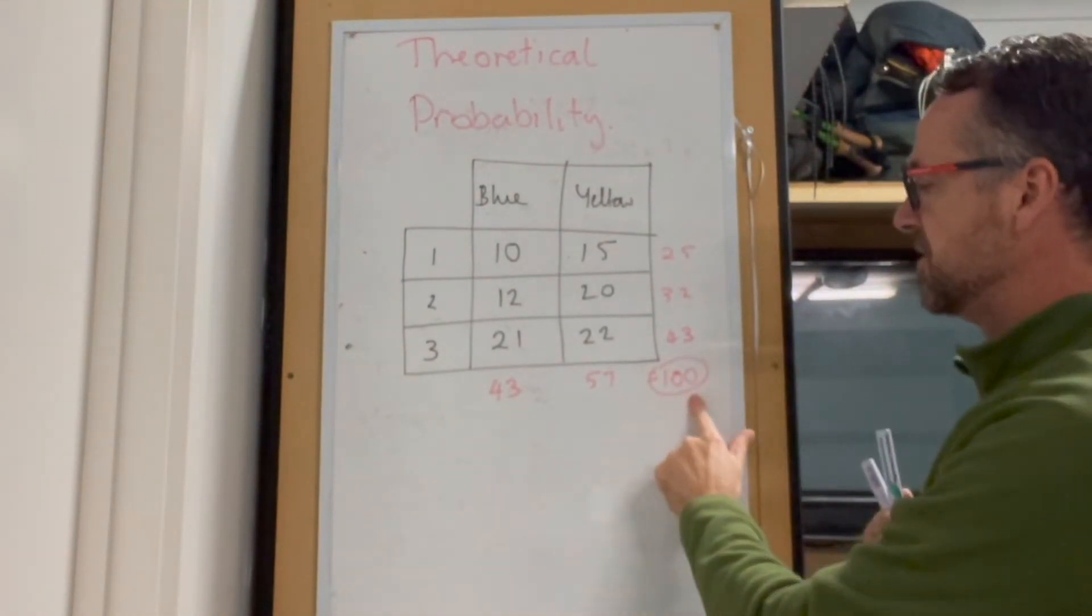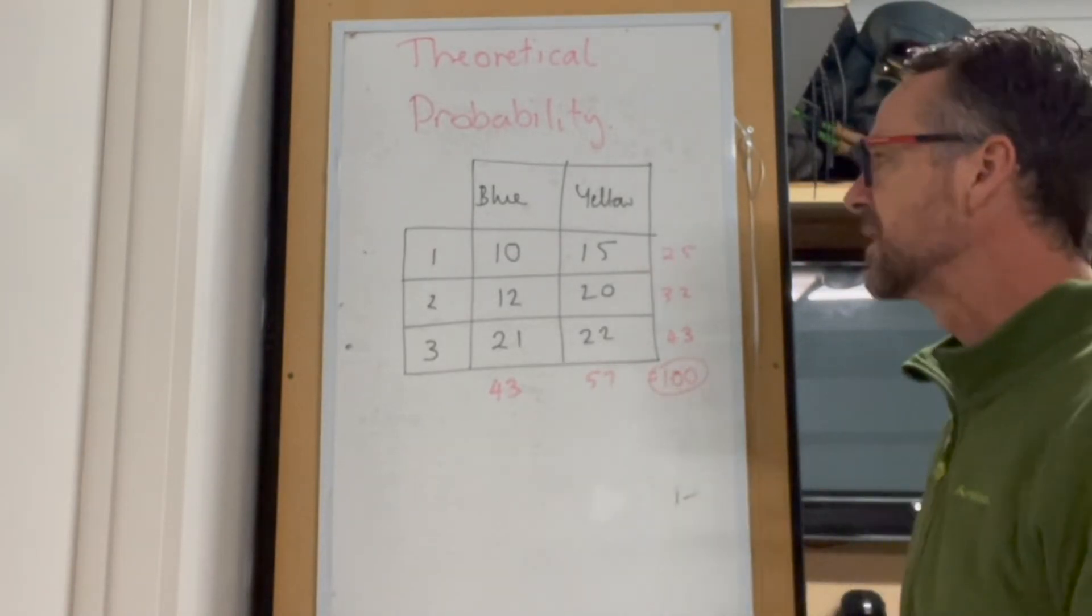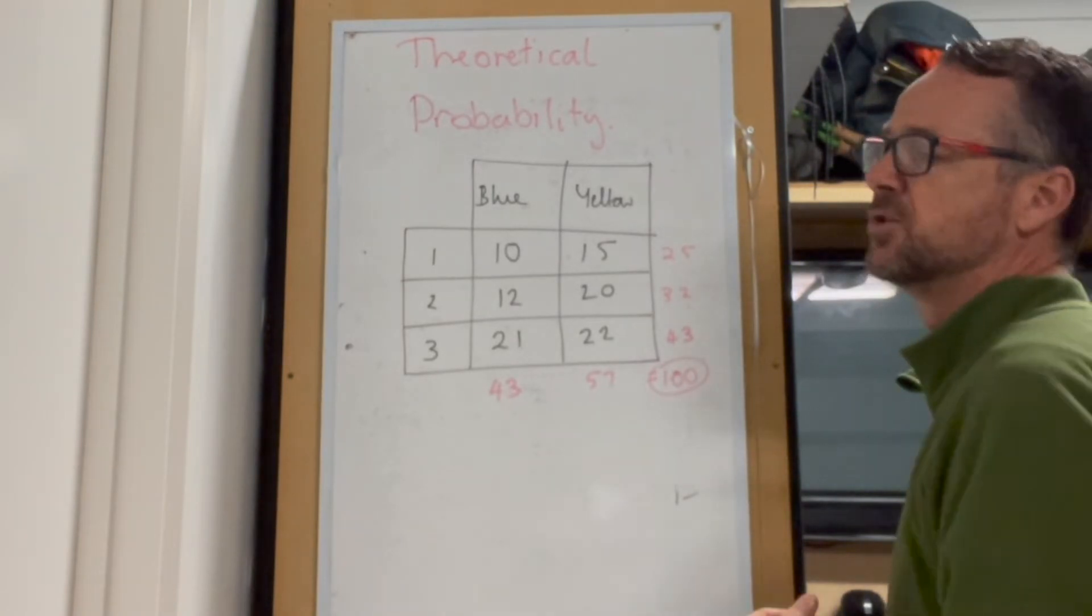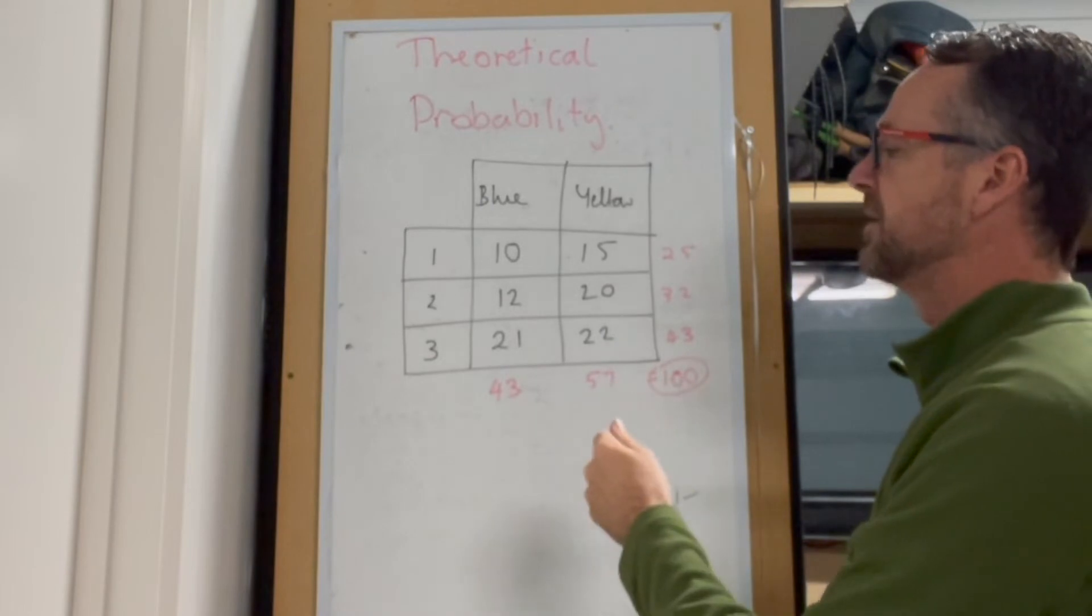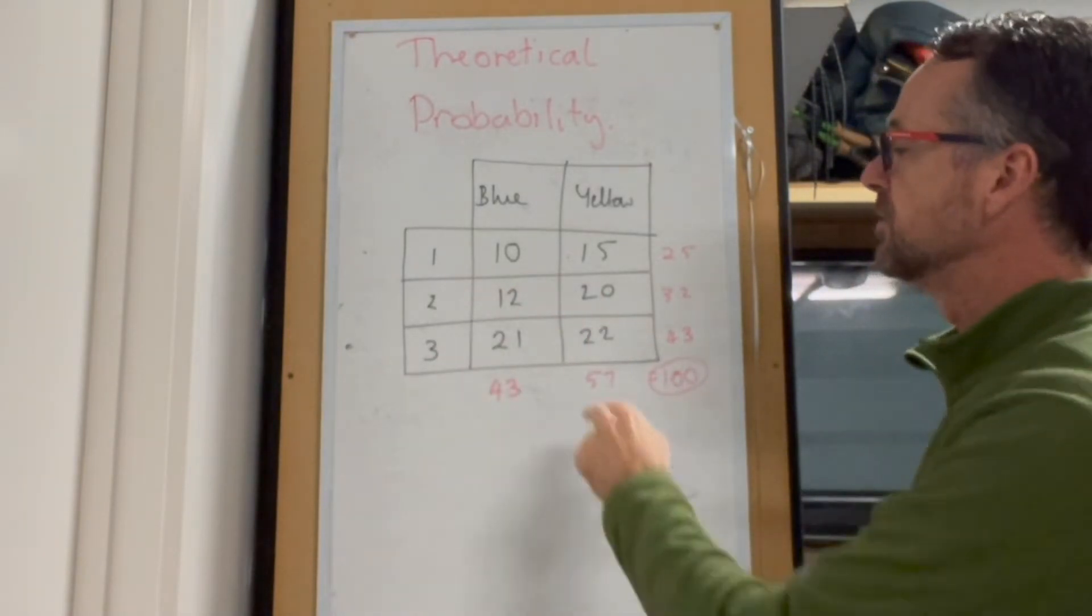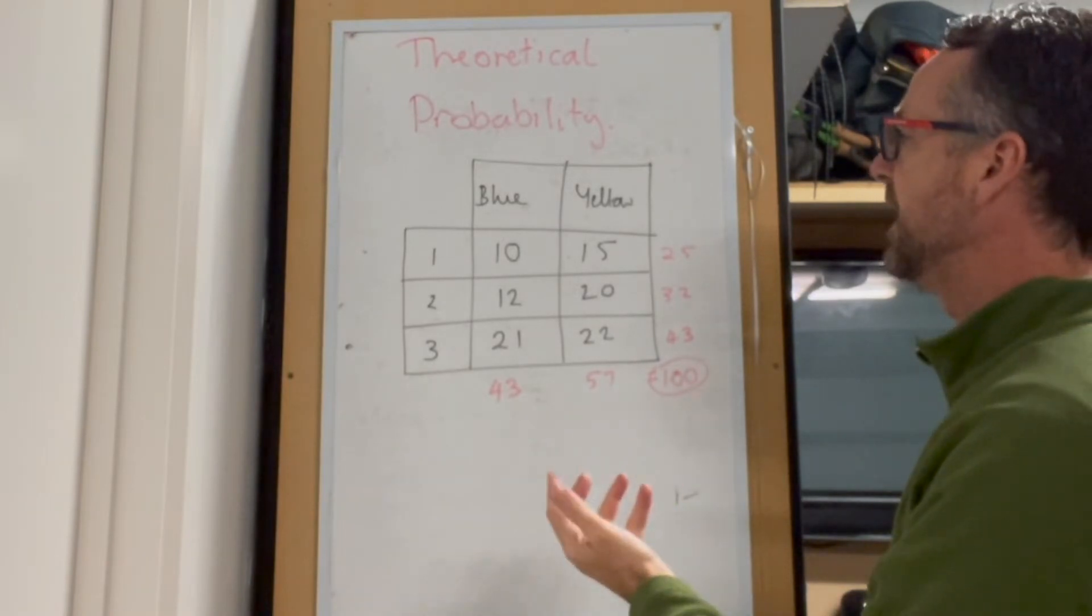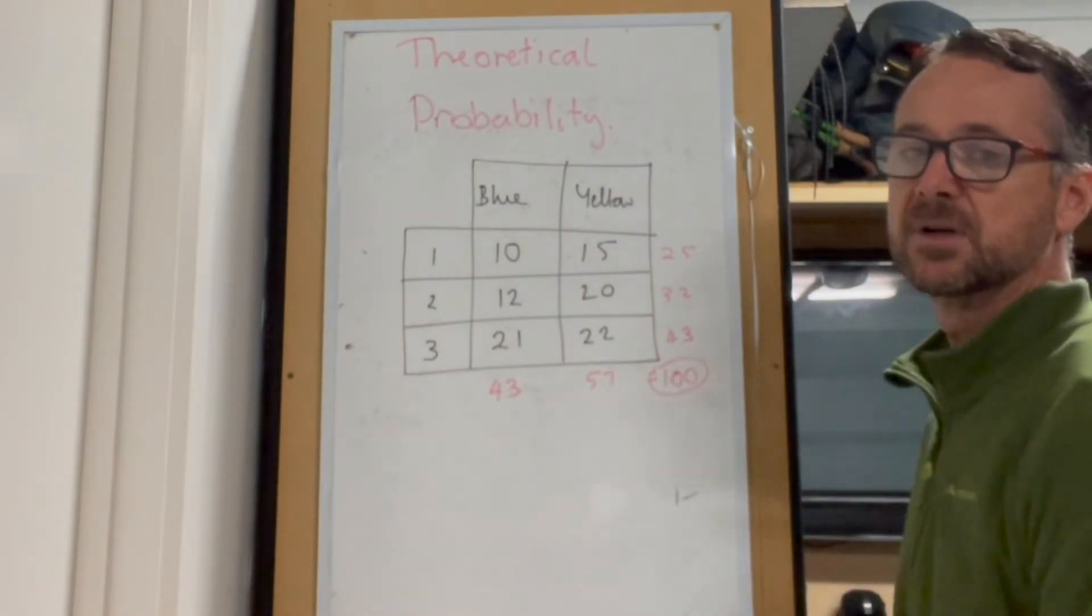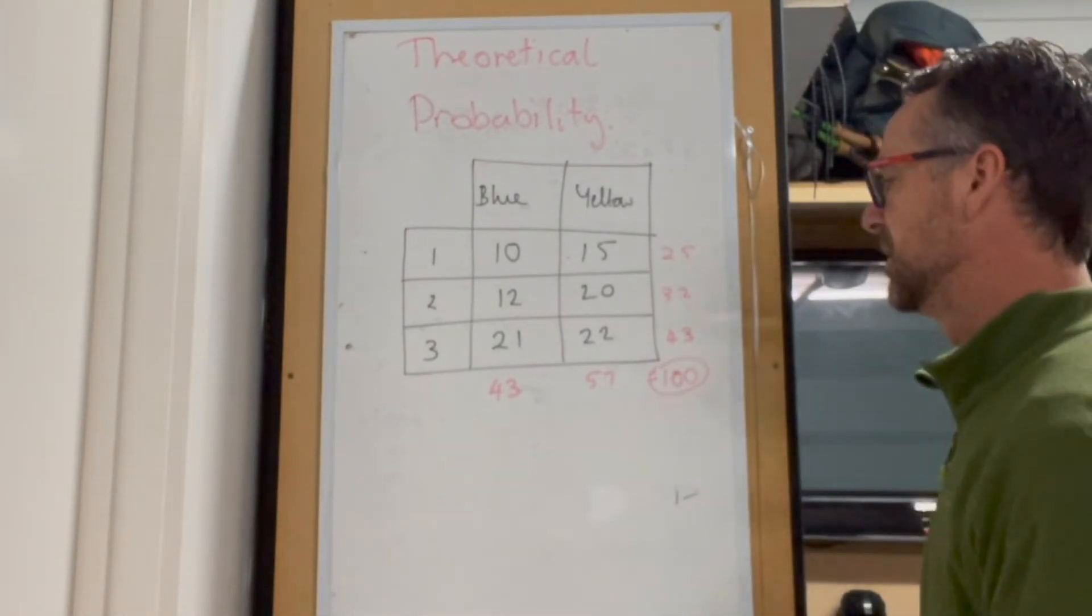So now we know we have 100 counters in total. So now we can ask questions relevant to the particular information we've got. For example, what are your chances of having a blue counter that has two on the back of it? Well, that'd be 12 out of that 100. What are the chances of pulling out a yellow counter? Well, that'd be 57 over 100. So what we want to do now is have a look at a couple of questions and see how we go about solving those.